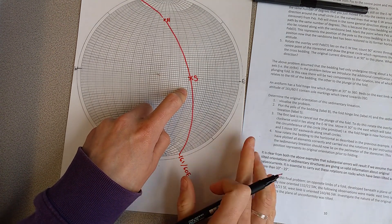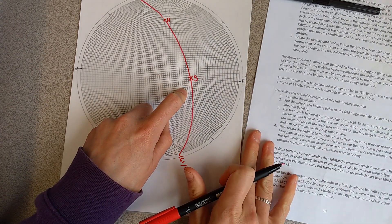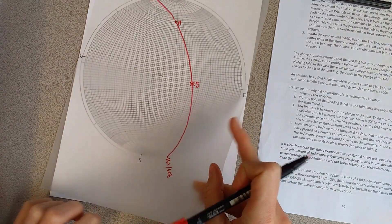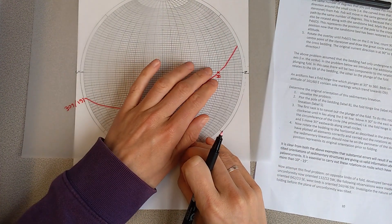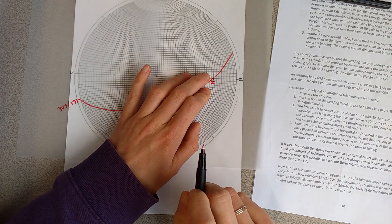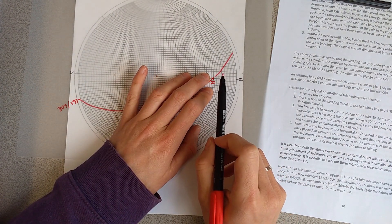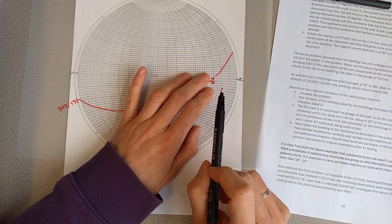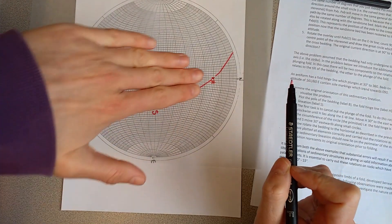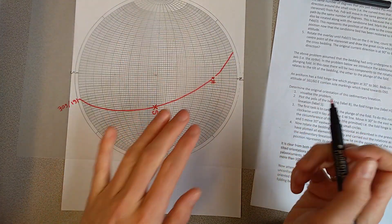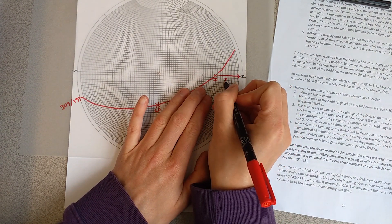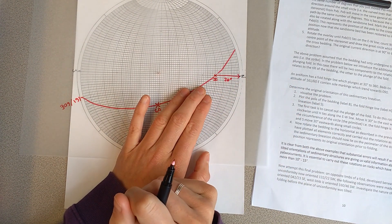So first of all, what we're going to do is cancel out the plunge of the fold. So to do this, we're going to rotate until the hinge of the fold lies on the east-west line. And then what we're going to do is we're going to move H to the circumference of the circle. So in that case, the fold hinge will now be horizontal. So it's going to go from plunging to horizontal. So if we move the fold hinge here out, that is, we're moving it by 30 degrees.